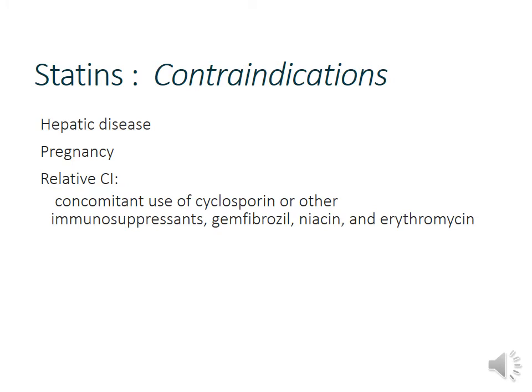Contraindications for statins: preexisting hepatic disease is a relative contraindication — the more severe, the less likely to use a statin. Avoid in pregnancy due to teratogenic effects. Other relative contraindications include drugs that inhibit CYP3A4, increasing statin levels. Gemfibrozil, a fibrate, also increases statin levels. Niacin can increase the risk of myopathies. Erythromycin is a macrolide and a CYP3A4 inhibitor, raising statin levels. Other notable drugs for cardiac patients include amiodarone and verapamil, which also inhibit CYP3A4. Grapefruit juice should also be noted.